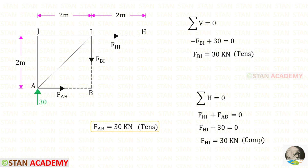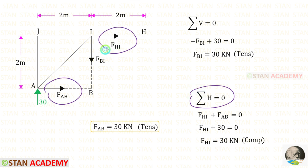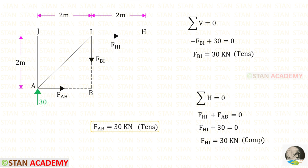Now applying sigma H equals zero. Both forces are acting towards the right side so both are positive. We know FAB is 30 kilo-Newton tensile. Applying that, for FHI we get a negative value, meaning it is compressive.